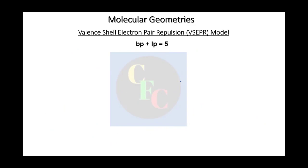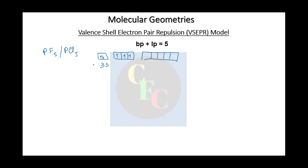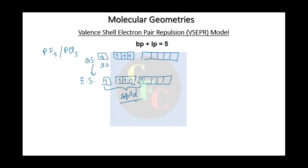Now we go to the next level: five total electron pairs. The classic example is PF5 or PCl5. We have 3s and 3p orbitals, and d orbitals come into the picture for hybridization. In the ground state it looks like ammonia, but in the excited state there are five unpaired electrons, so it can form five sigma bonds. This is called sp3d hybridization.